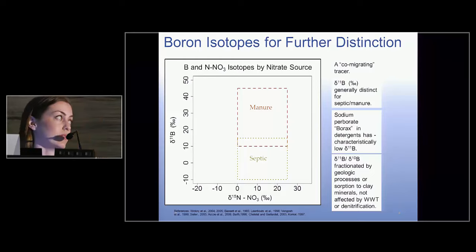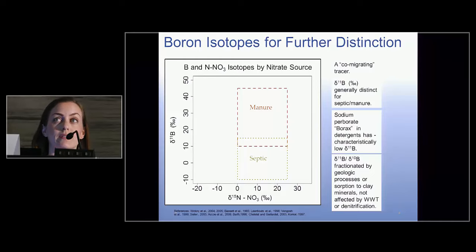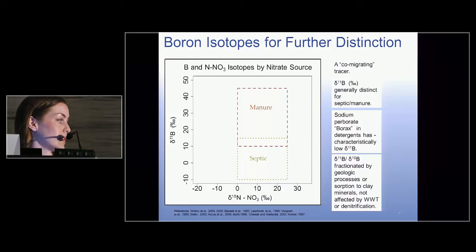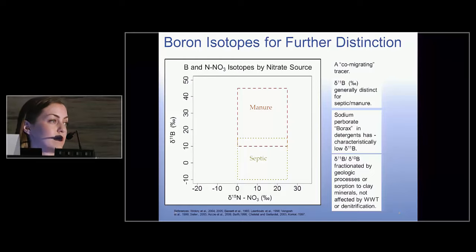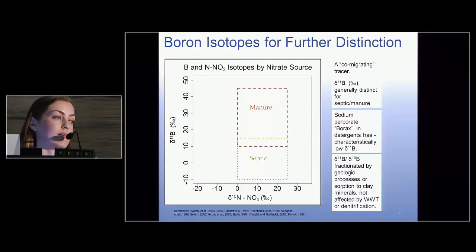Pulling from a handful of literature studies, manure has a much higher D11B signature, while septic has a much lower signature on the y-axis, plotted against the nitrogen isotope of nitrate on the x-axis.